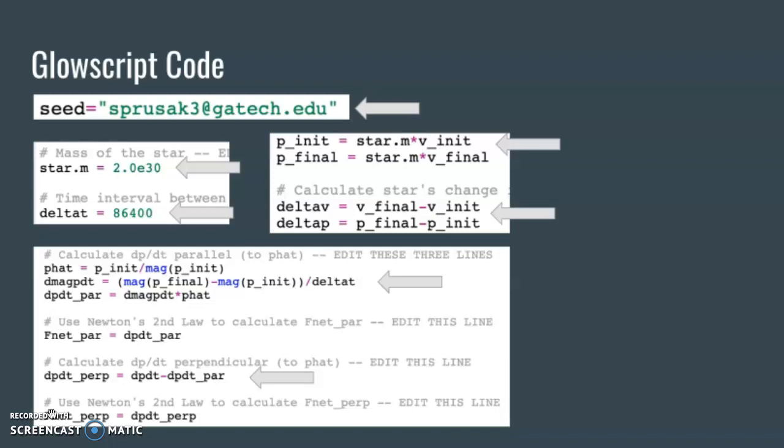Next, I updated the momentum equations to solve for the magnitude. This magnitude was used to solve for the parallel component of momentum. Finally, using the parallel component and the overall change in momentum, the perpendicular component of the momentum was determined with the following equation: dp dt perpendicular equals dp dt minus dp dt parallel.